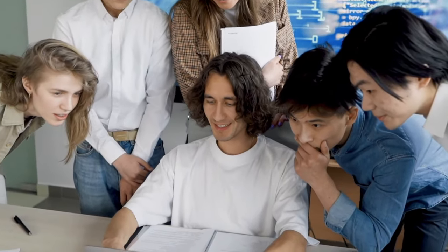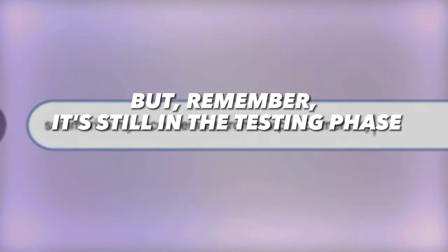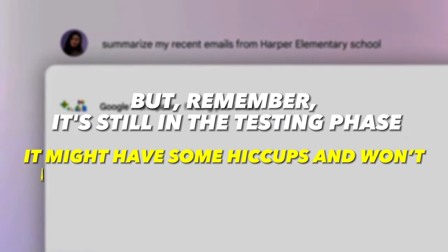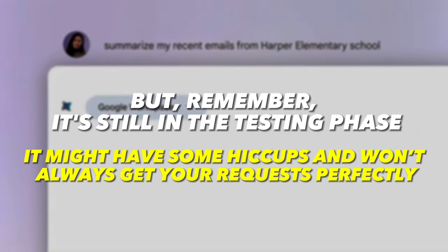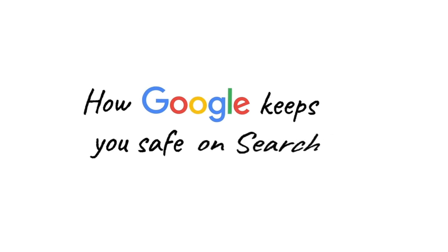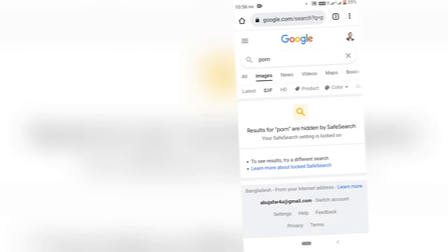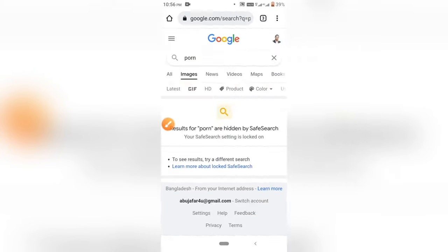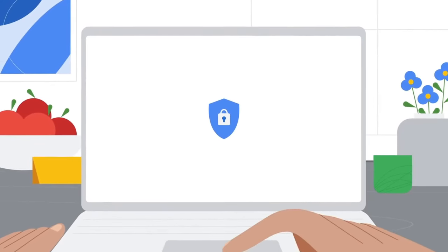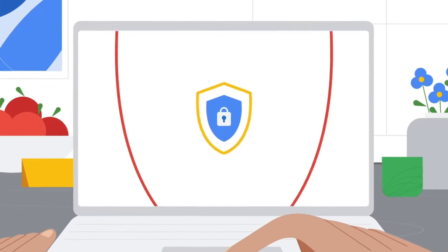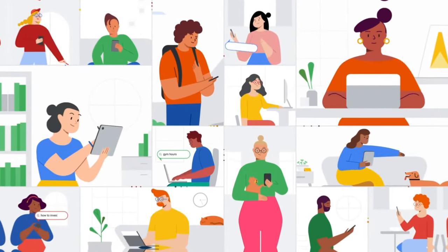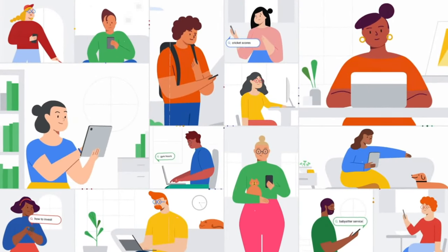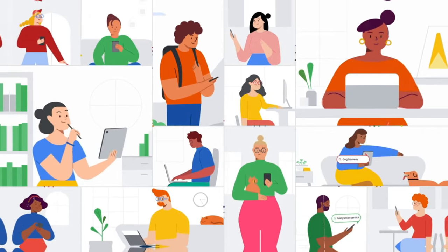This could be a creative boost for writers, content makers, or students who need some inspiration or help. But remember, it's still in the testing phase — it might have some hiccups and won't always get your requests perfectly. Google has also added safety features, making sure the tool doesn't make harmful or misleading images, and respecting privacy and authenticity. It's designed for users who are 18 years old or above, as some content might need adult supervision.